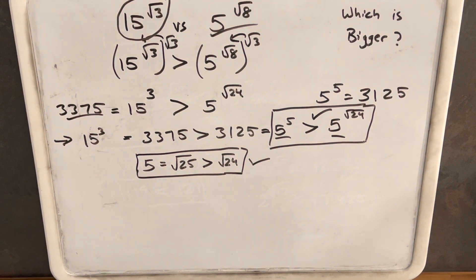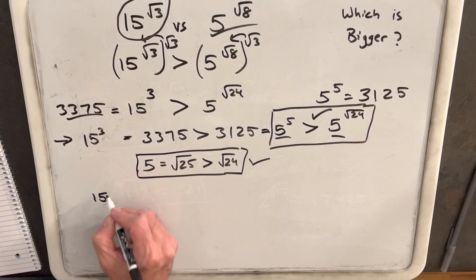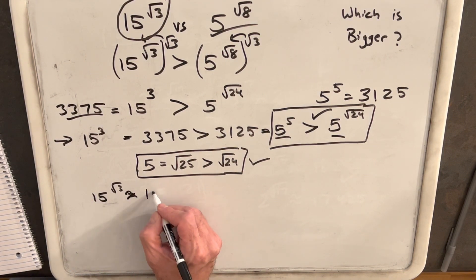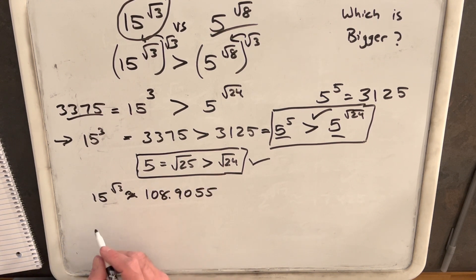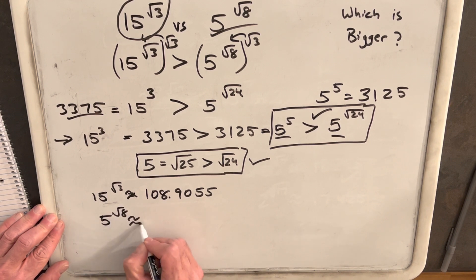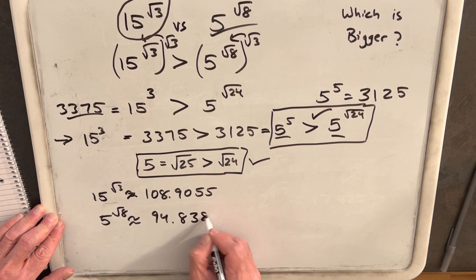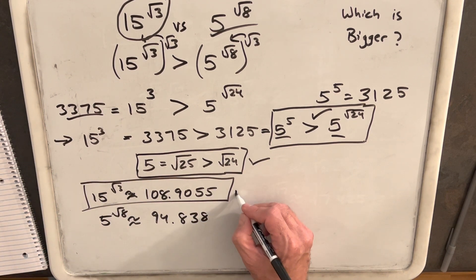Now we just want to check that. I used the calculator before this video so let's see what I got. Okay so 15 to the square root of 3 is approximately 108.9055 and 5 to the square root of 8 is approximately 94.838. So that validates our answer. So that's it.